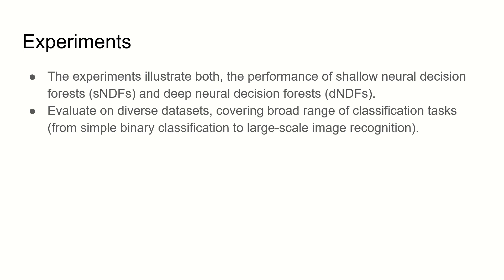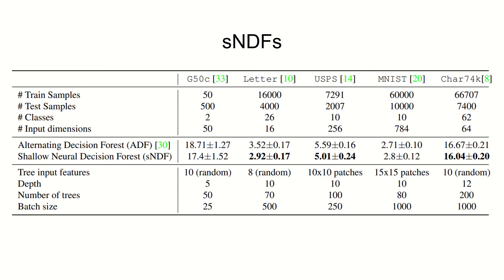In this first test we evaluate shallow deep neural forest against alternating decision forest with respect to G50C, Letter, USPS, MNIST, and Cars74K datasets. As you can see in the middle, SDNF is much better than ADF in three of the datasets.